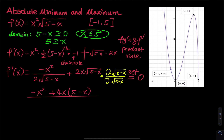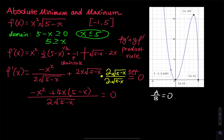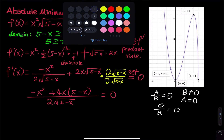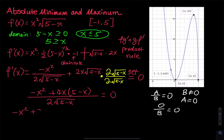After combining, we have the numerator over 2 times square root of 5 minus x equal to 0. When a fraction equals 0, the numerator must equal 0. The numerator is negative x squared plus 4x times 5 minus x, which simplifies to negative x squared minus 4x squared plus 20x, giving negative 5x squared plus 20x equals 0.